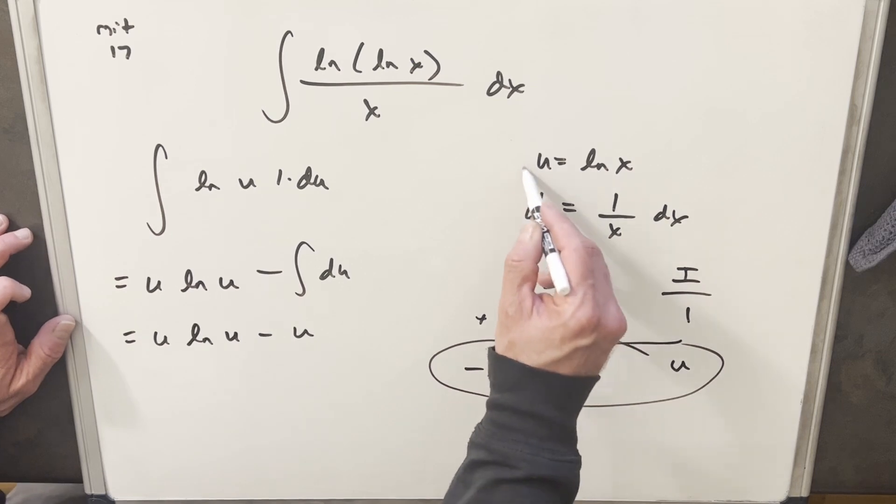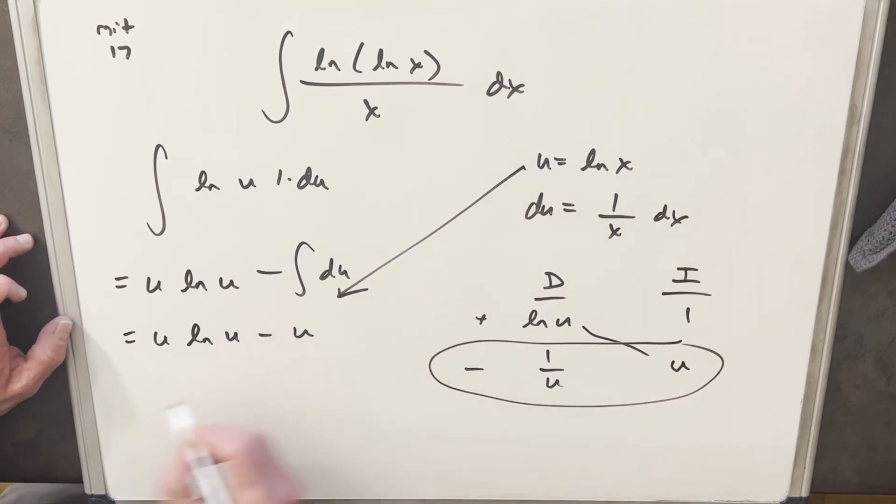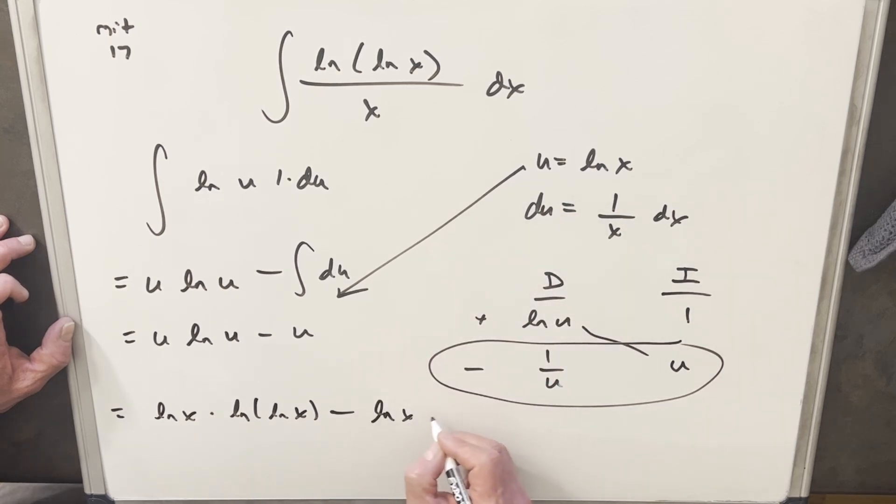So then to finish this, all we need to do is back substitute with our u value. So we're gonna have natural log of x times natural log. You need to be careful what the multiplication is. This is inside this natural log. And then another one minus ln x plus c. And that's it. We're done.